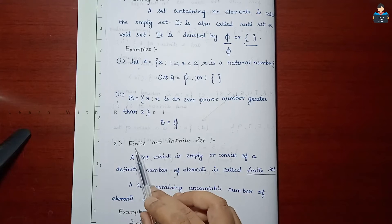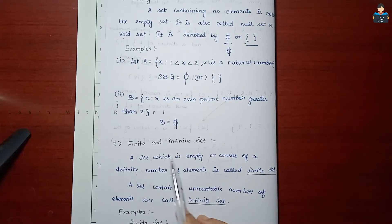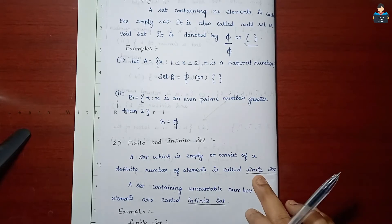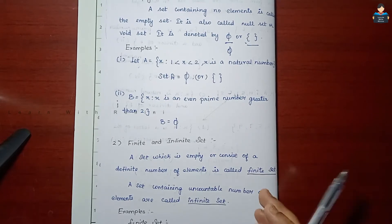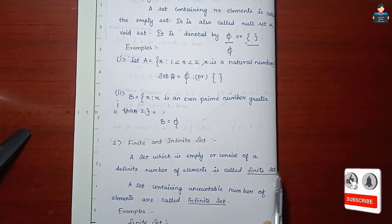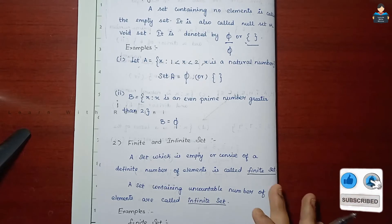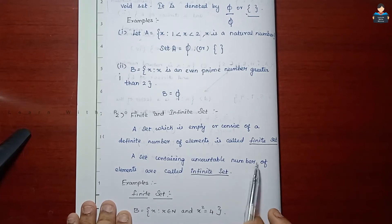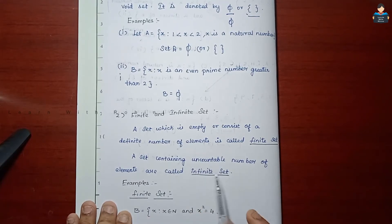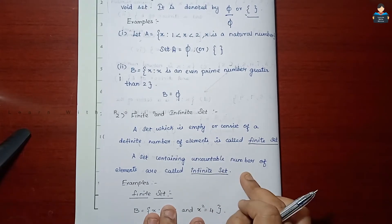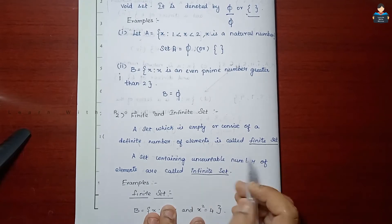Next, we know about finite and infinite sets. A set which is empty or consists of a definite number of elements is called a finite set — that is, a set whose elements are countable. A set containing an uncountable number of elements is called an infinite set.